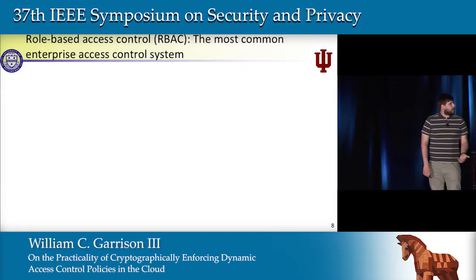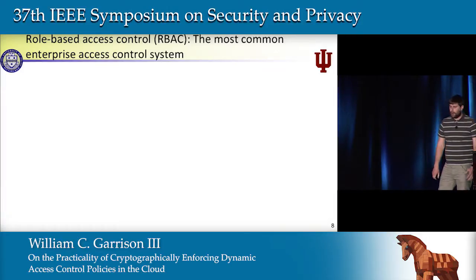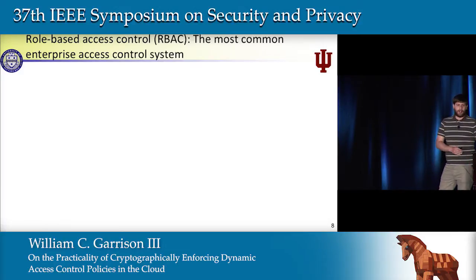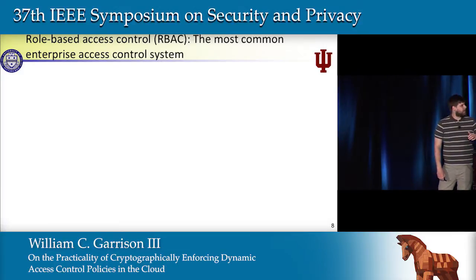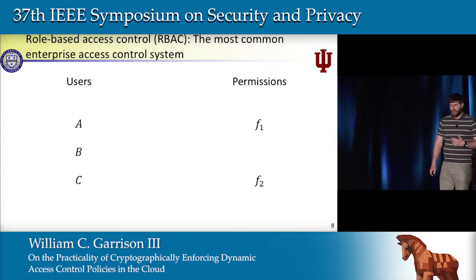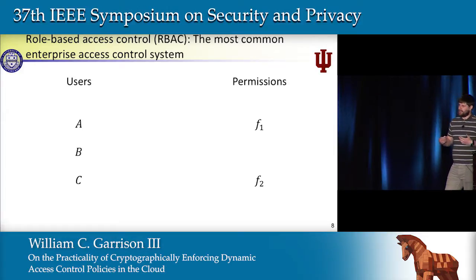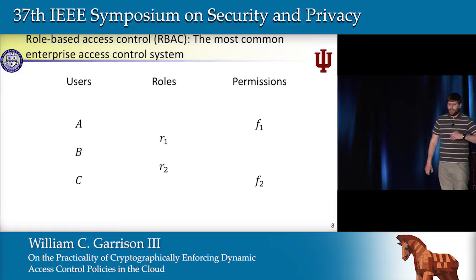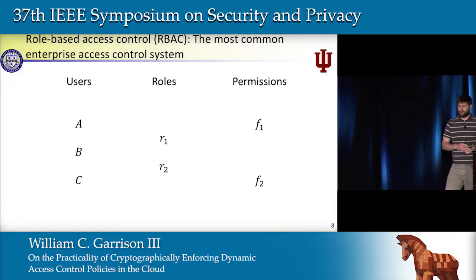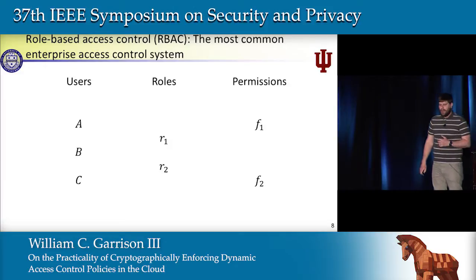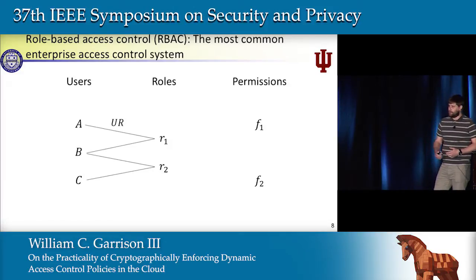In particular, we're going to be enforcing role-based access control, or RBAC. We want to enforce existing policies, so we're going to be looking at the most common enterprise access control system. In this system, we'll have a set of users, a set of permissions—which we can think of as a set of file accesses—and a set of roles acting as a level of indirection between the users and file accesses. Users will be assigned to roles, they'll belong to roles, and the UR relation will represent the user-role binding.